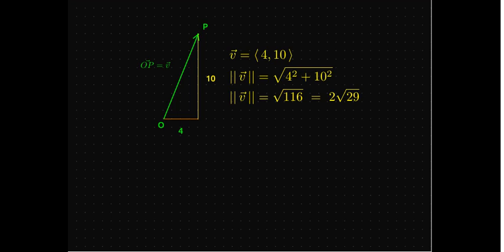And so in this case, I get 4 squared plus 10 squared, that's 116. And when I simplify radical 116, I get 2 times radical 29.